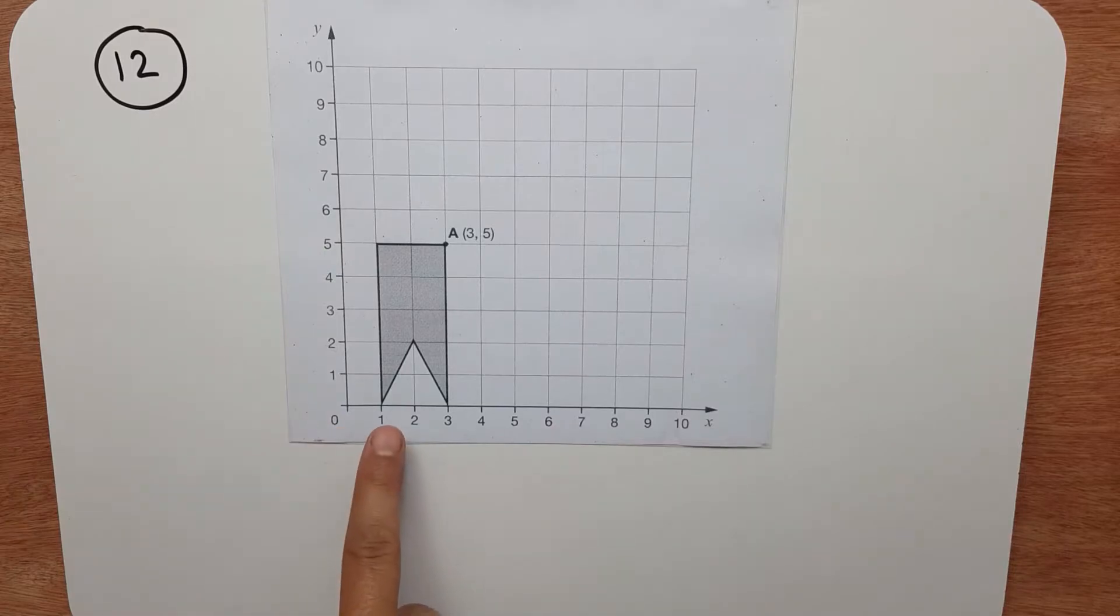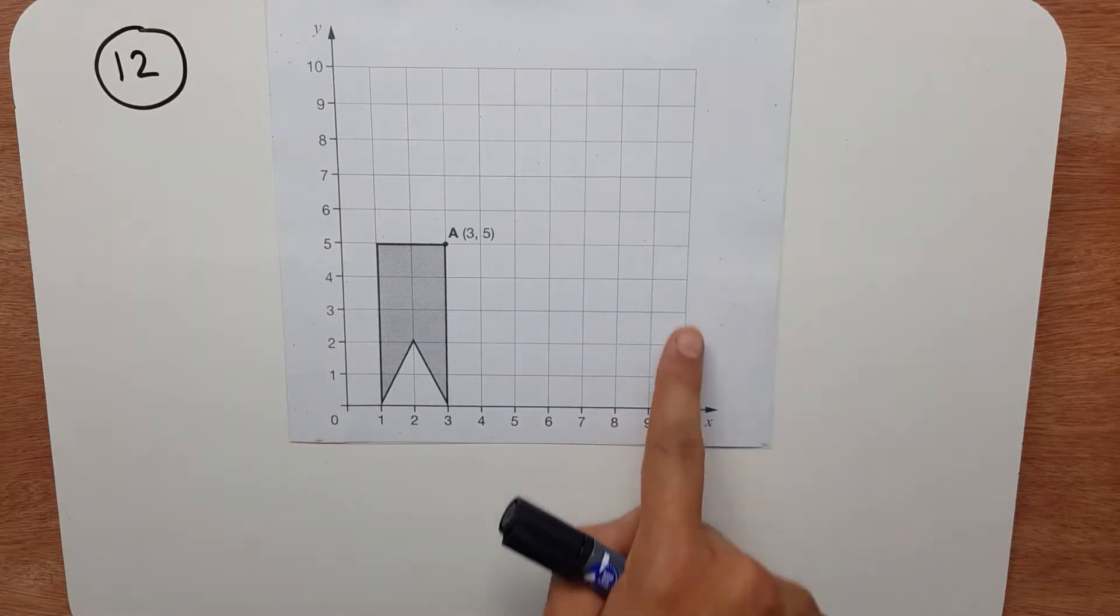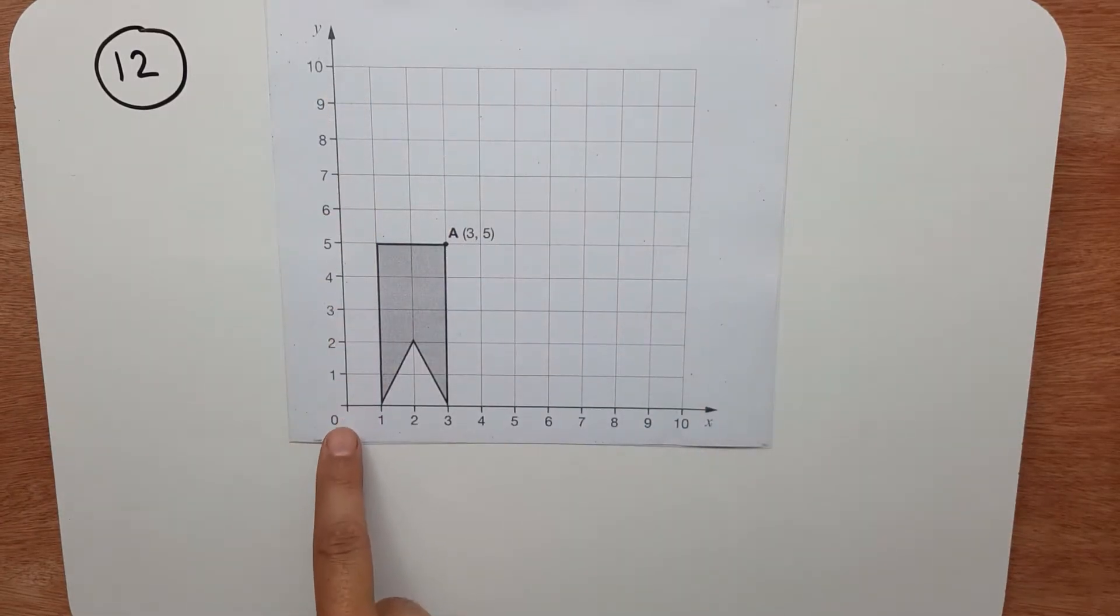In question 12, we're given this shape on this grid. So if you go along, you go along the x-axis, so that's along the corridor,